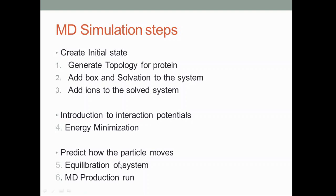The last two steps are equilibration of the system and the final MD production run. Equilibration is performed with constant pressure, constant temperature, and constant volume. Keeping these three things constant, we run the simulation for the biomolecule. In this tutorial we will be performing all six steps, and I think going through all of them will help you understand it much better.